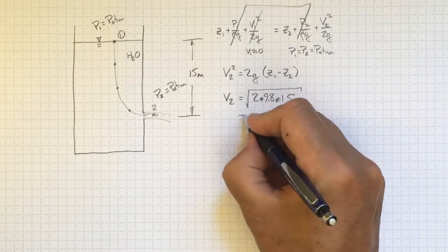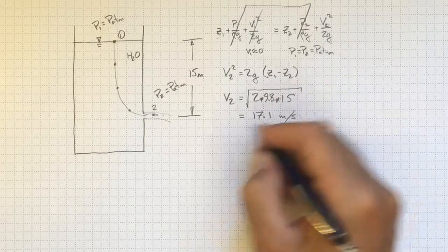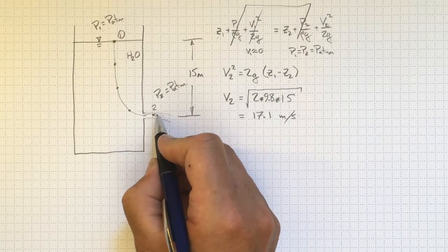And if we punch that into our calculators, I get 17.1 meters per second. So the water will come out of this hole at 17.1 meters per second.